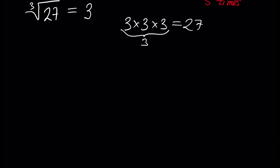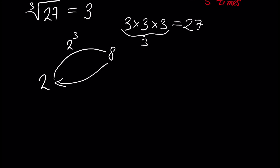It's important to understand that root of a number is the opposite operation to rising to a power. For example, if we have 2 and by rising to the power 3 we get 8, then the opposite operation — the third root of 8 — will bring us back to the initial point, 2.